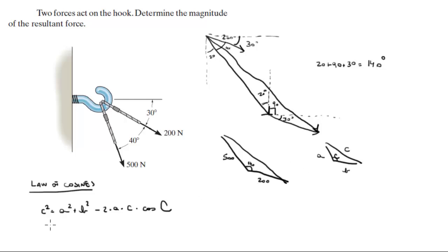So basically what you do is you plug in the values. A would be 500 square plus 200 square minus 2 times 500 times 200 times cosine of the angle between them which is 140.